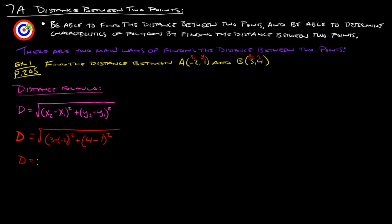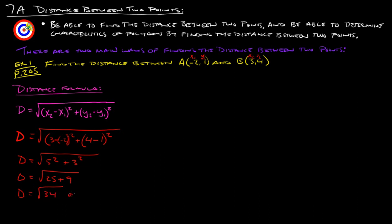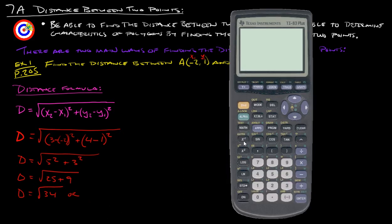Distance is going to be the square root of — a minus and a negative, so that's 3 plus 2 — that's going to be 5 squared, plus 4 minus 1, which is 3 squared. So the distance is going to be the square root of 5 times 5, which is 25, plus 9. So the distance is the square root of 34.